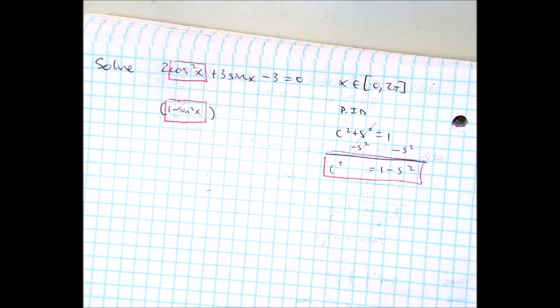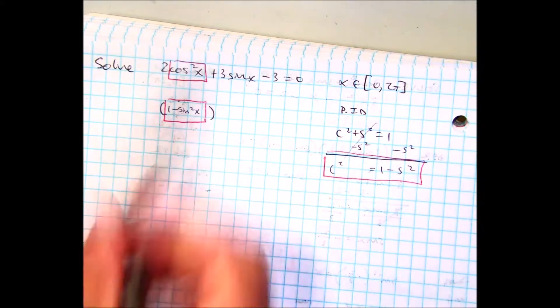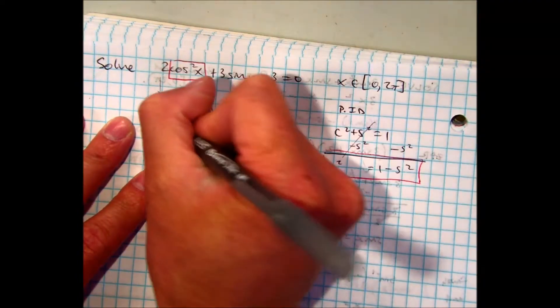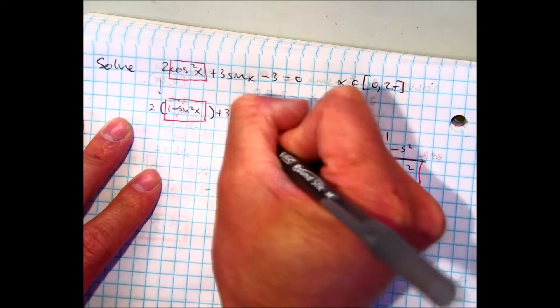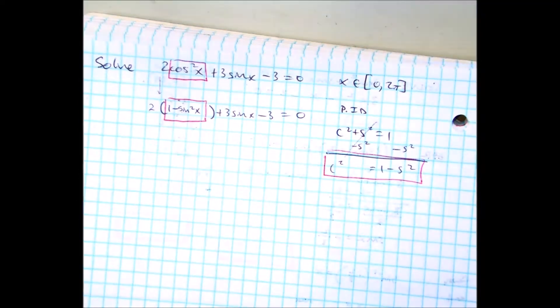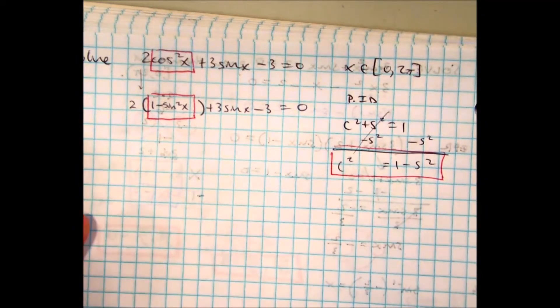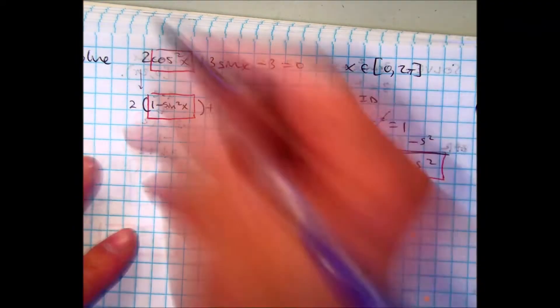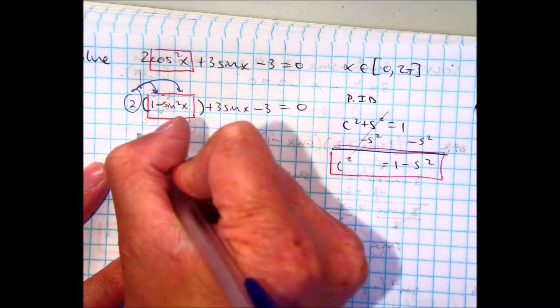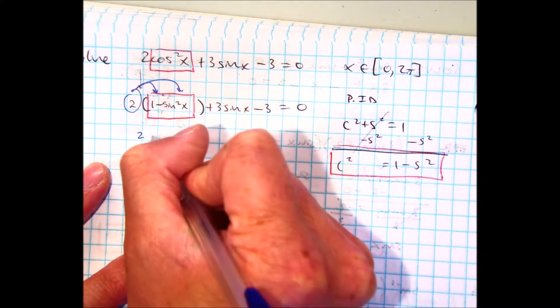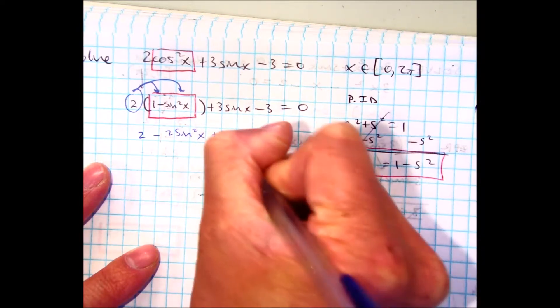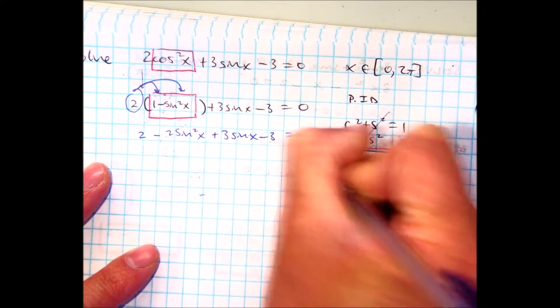Remember when you're doing that substitution, you're putting your substitution in parentheses. And I'm bringing everything down. I have a 2 here. 2 times 1 minus sine squared x plus 3 sine squared x minus 3 equals 0. What do I have to do? We're going to have to distribute. 2 times 1 gives us 2. 2 sine squared x plus 3 sine squared x minus 3 equals 0.